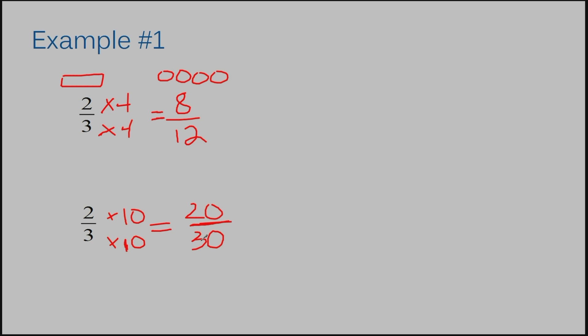You could think of the twenty-thirtieths as a hundred pennies in our dollar-and-quarter example, or you could think of it as twenty nickels. They're all going to total a dollar even though they look different — so these are still equivalent. Let's move on to example number two.